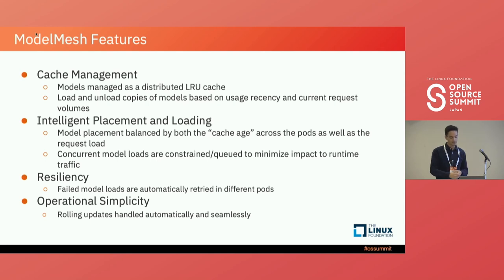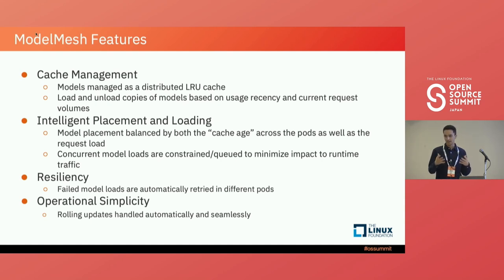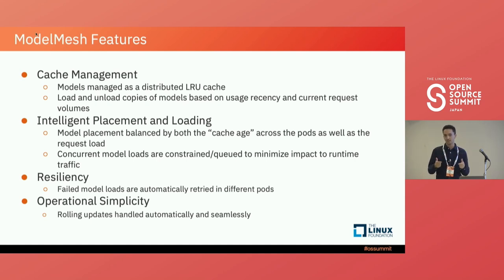When it comes to loading, concurrent model loads are always constrained or queued in order to minimize impact to runtime traffic. There are also two bigger features: resiliency, which refers to automatic recovery — failed model loads are automatically retried in different pods — and operational simplicity, which is about rolling updates handled automatically and safely. There's a concept of a vModel in Model Mesh where an endpoint to a model is only updated once that model is successfully deployed, so you're never pointing to a model that's not yet successfully loaded.